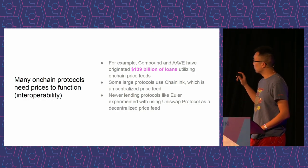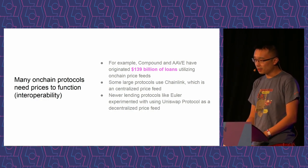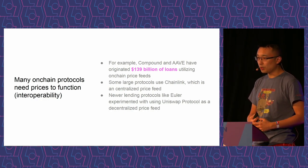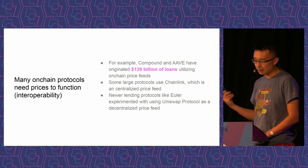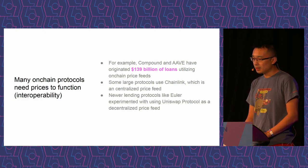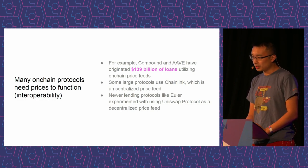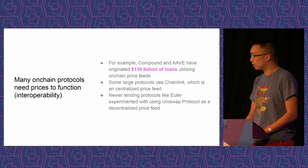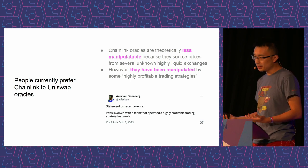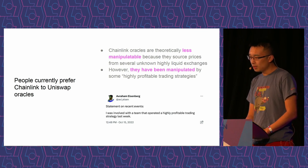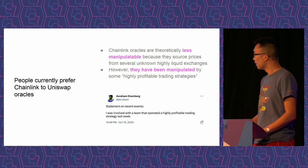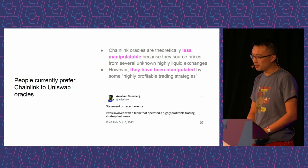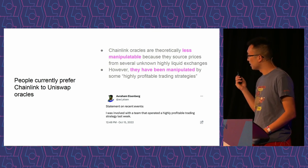There are many billions of dollars collateralized by loans that are valuated using Oracles. Some of them use Chainlink. Euler experimented with Uniswap, but as the merge happened, some important security assumptions were removed, so they eventually also moved to Chainlink. People prefer Chainlink, presumably because it's theoretically less manipulatable, partly because it is off-chain and less transparent to attackers. But there are these highly profitable trading strategies that people use, and it doesn't always end very well for either party.